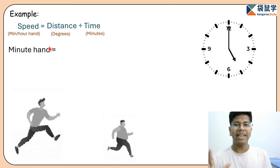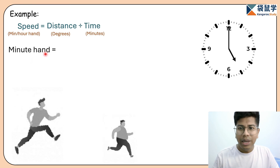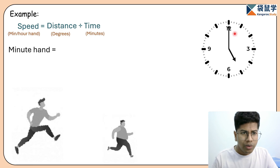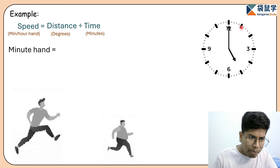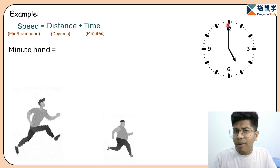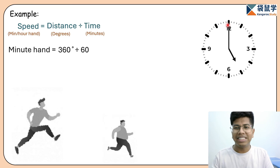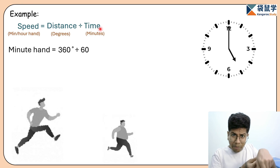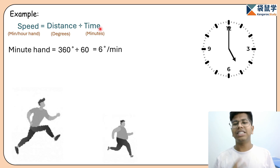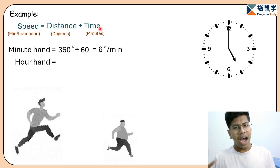To calculate the speed of the minute hand: speed equals distance divided by time. If the minute hand completes a whole circle, it travels 360 degrees, and the time it takes is one hour, which is 60 minutes. So the speed of the minute hand is 360 divided by 60, which is just 6 degrees per minute.